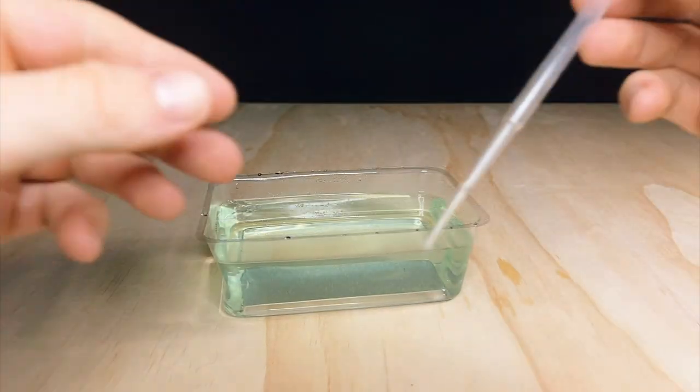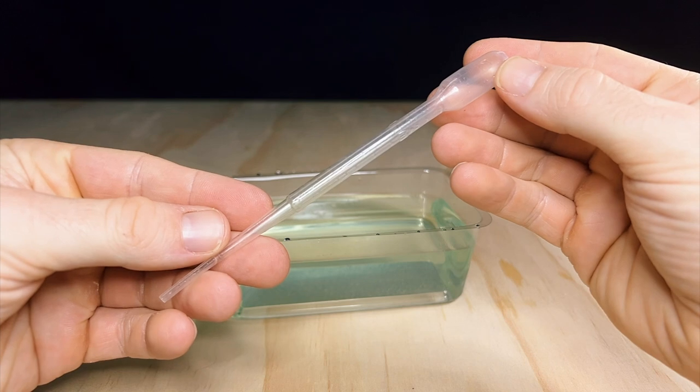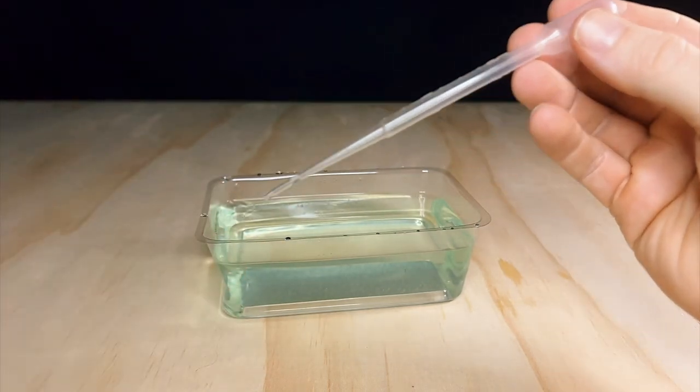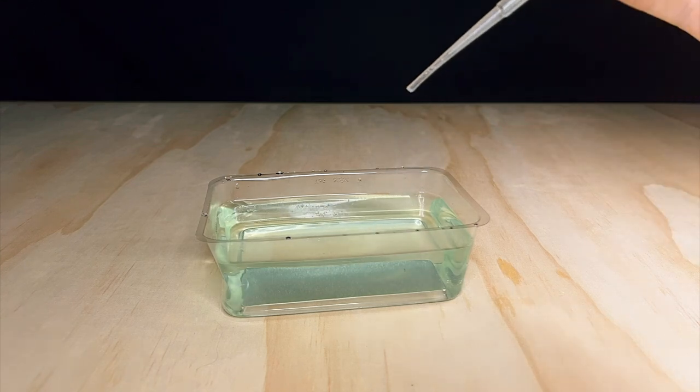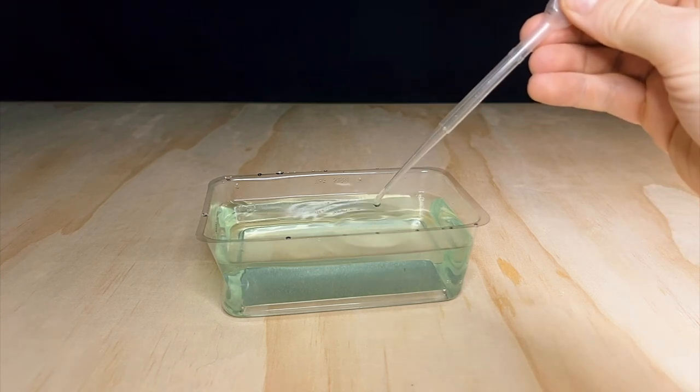One strange omission from this kit is a simple pipette or aquileash. A tool like this is necessary to move sea monkeys between tanks, so it's really unusual that they left it out. But at the same time, it's easy to see that there was a strong emphasis on keeping costs as low as possible for this kit.